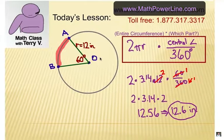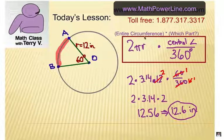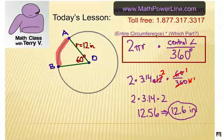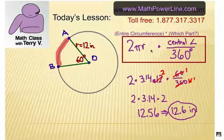A reminder about how we do it. If we want to find the arc length of AB here, we need to know the entire circumference, and then we multiply by the part of the circle we're talking about. And the part is the central angle divided by 360. So keep this formula in mind.